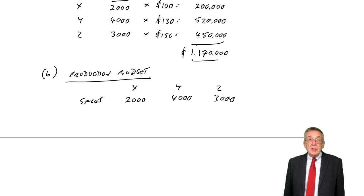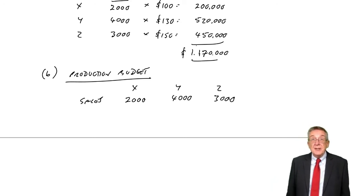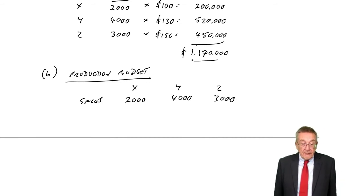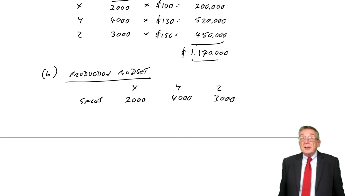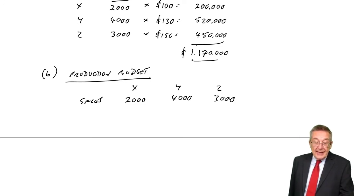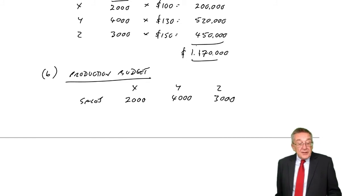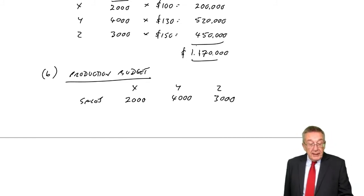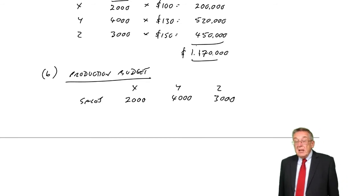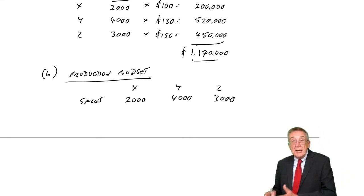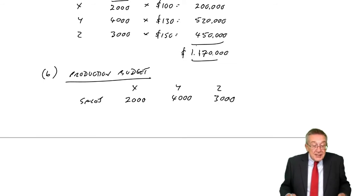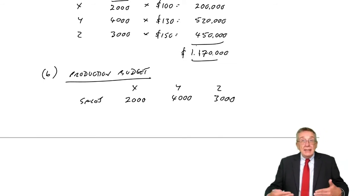So if we expect to sell 2,000 X's, why not budget on producing 2,000 X's? Because of inventory. The inventories of finished goods show opening inventory at the start of the year: 500, 800, and 700 units. At the end of the year, the closing inventory should be 600, 1,000, and 800 units. If we want our inventories to increase, we are going to have to produce not only the units we expect to sell, but in addition, a few extra to increase the inventory.